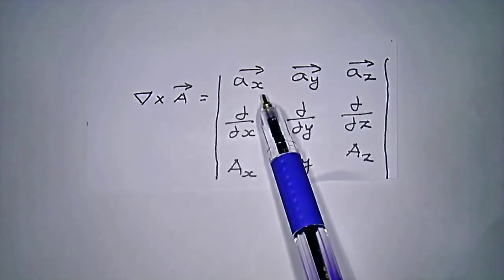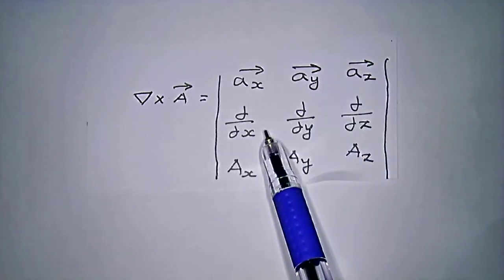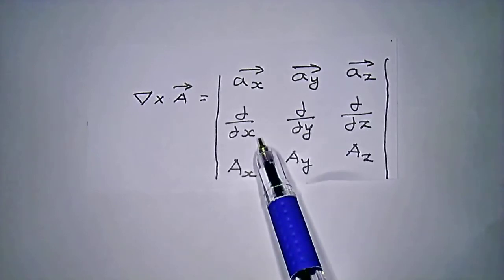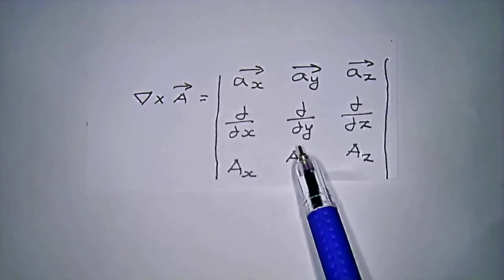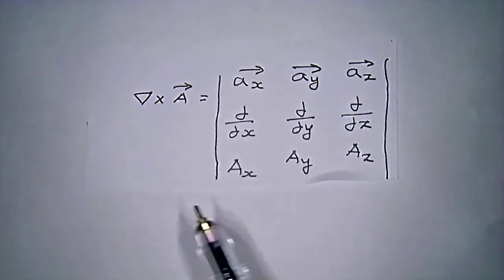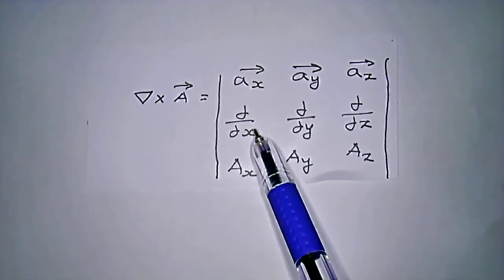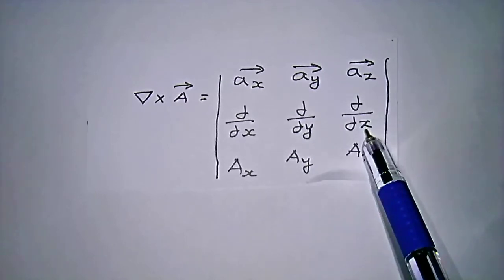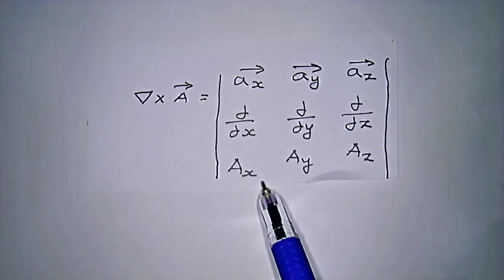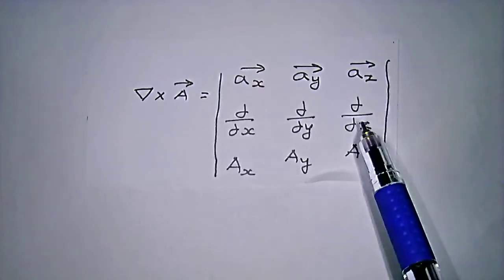The curl is expressed using a matrix with x, y, z axis coordinates. The first row contains the unit vectors, the second row contains the partial derivatives: ∂/∂x, ∂/∂y, ∂/∂z, and the third row contains the vector coefficients Ax, Ay, Az.